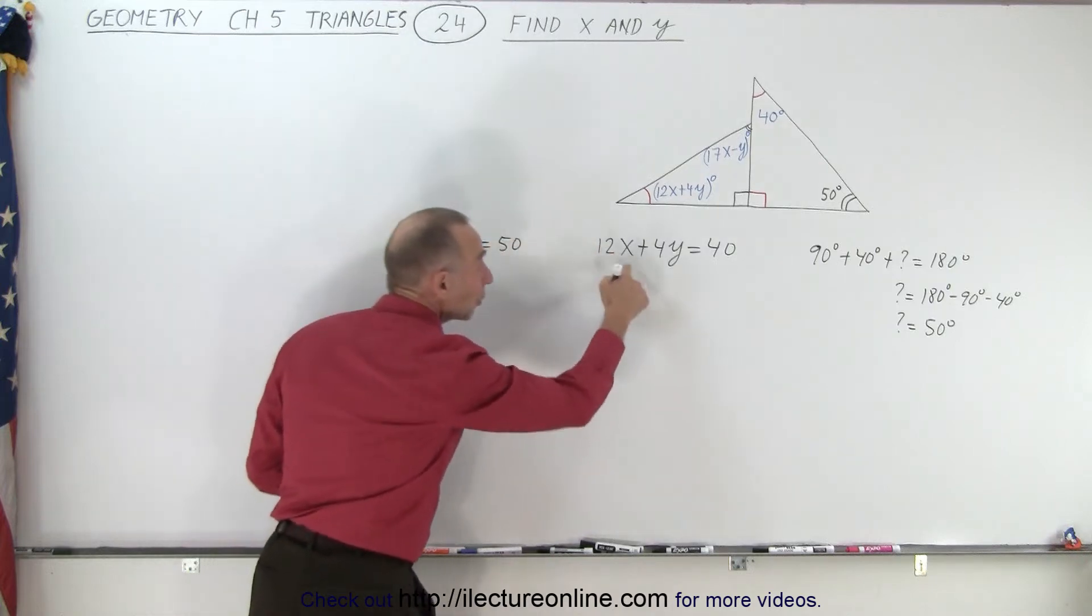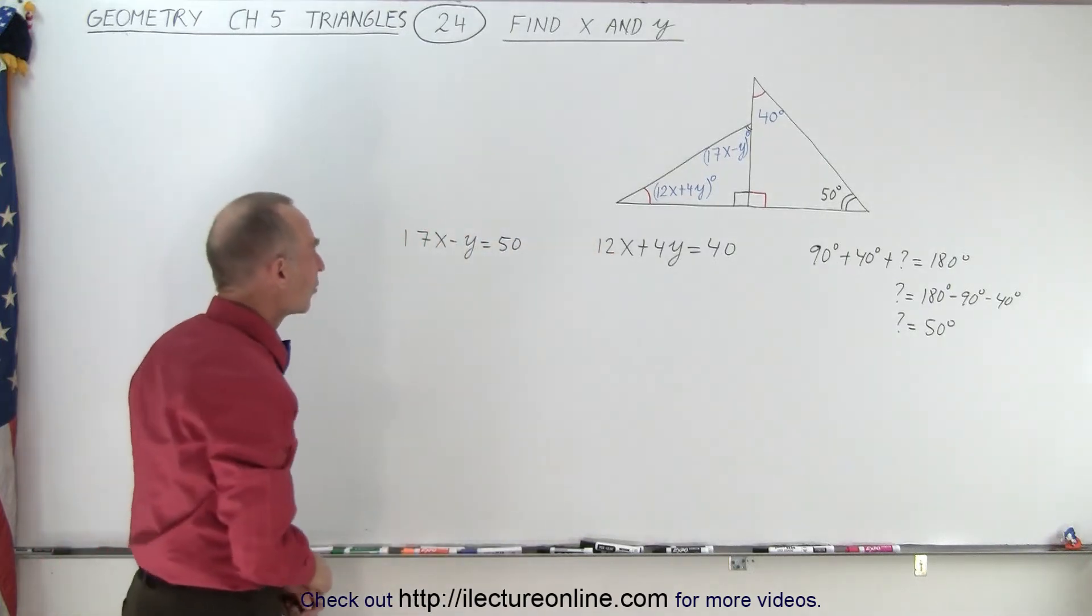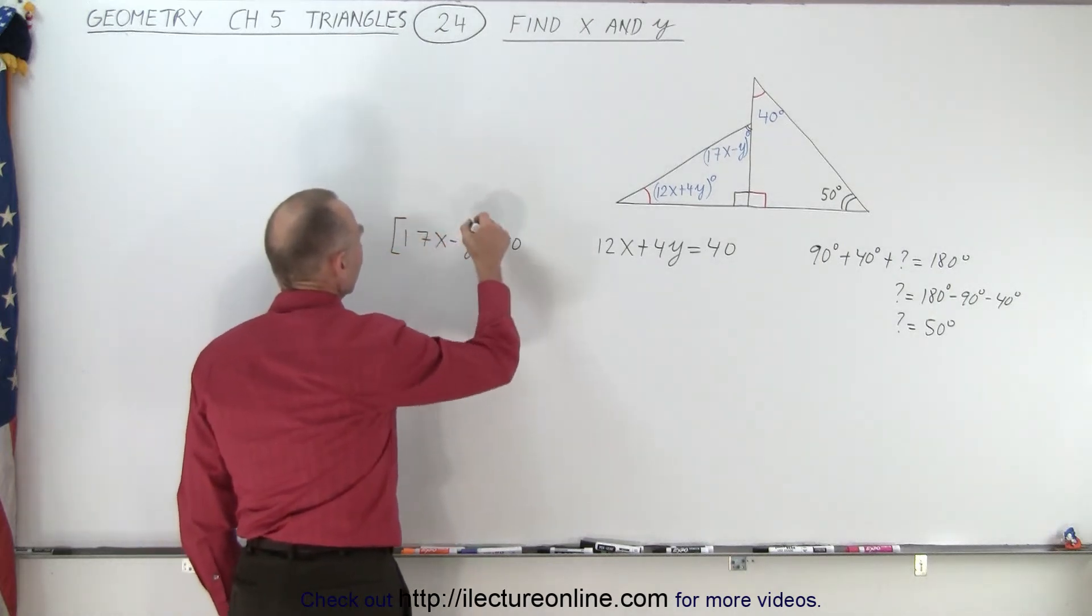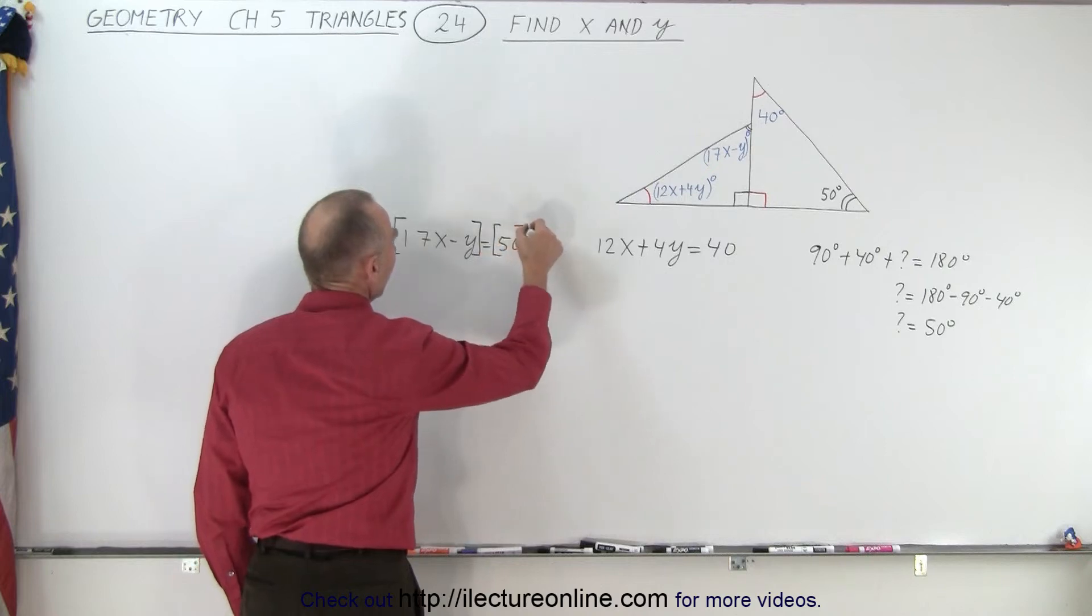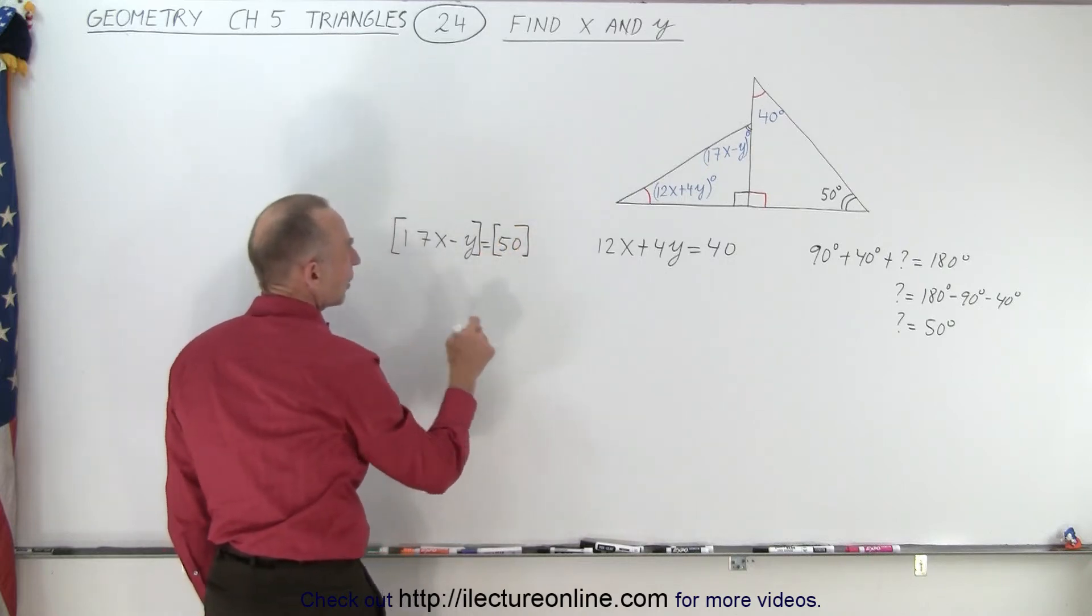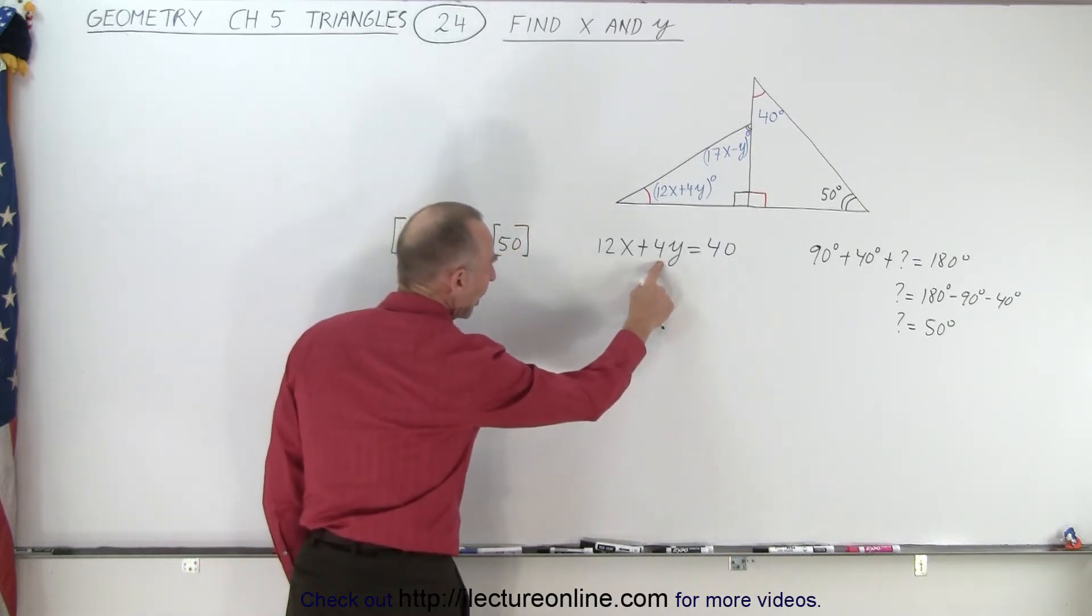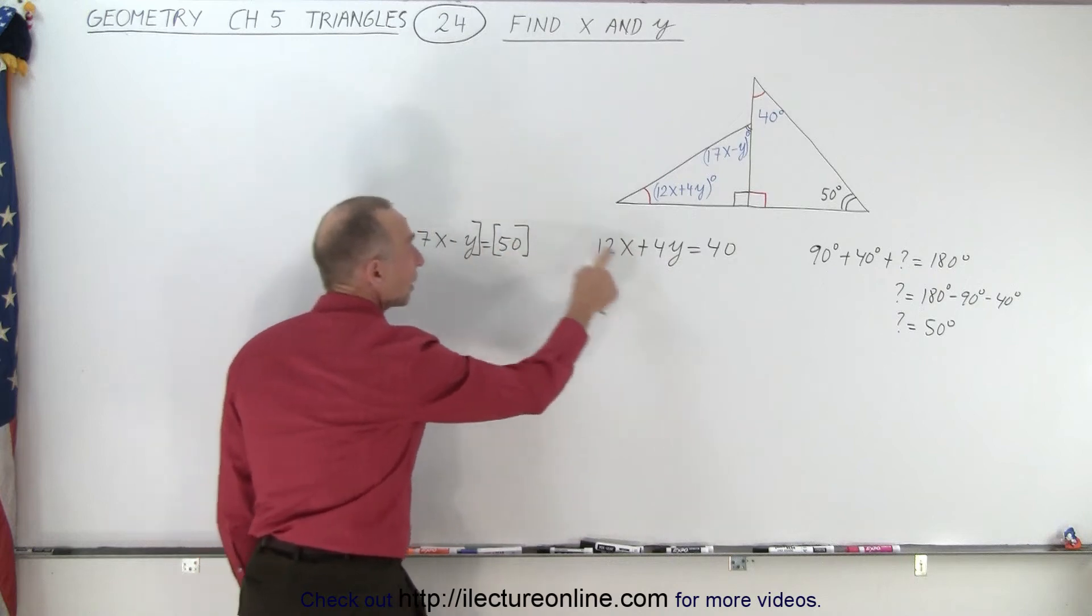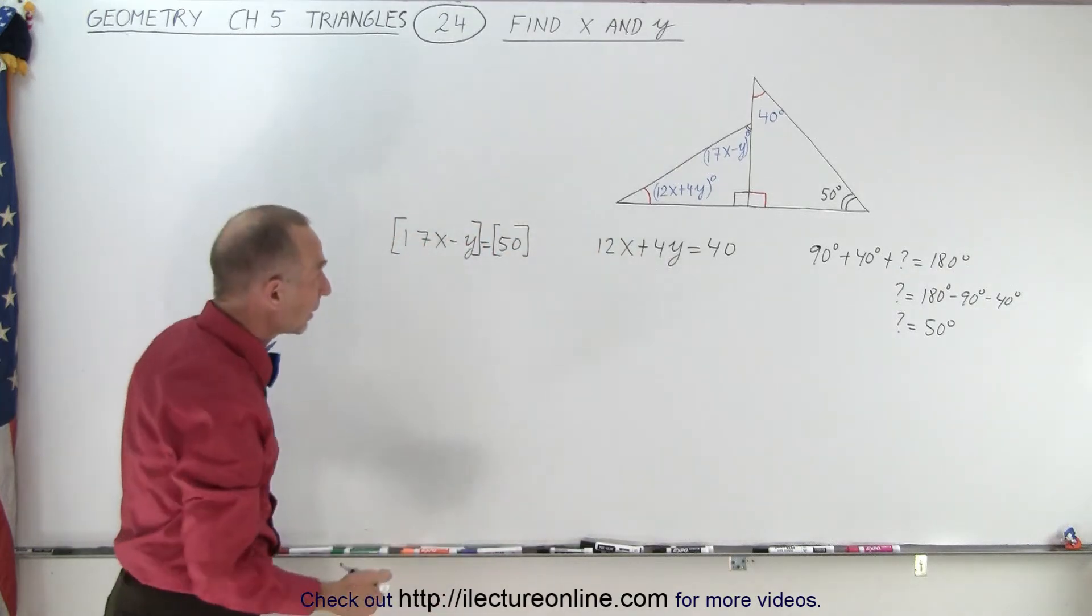Now we have two equations and two unknowns and we could solve those simultaneously. If I multiply both sides of the equation by 4, notice why did I do that? Because here I see a plus 4y and I see a minus 1y. So if I multiply this times 4 I'll get a minus 4y, then when I add the two equations together the y's will then be eliminated.